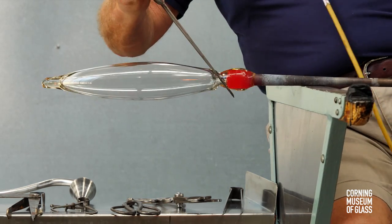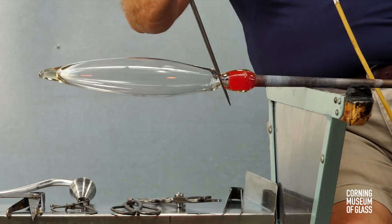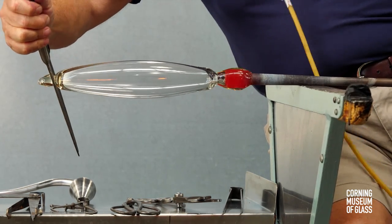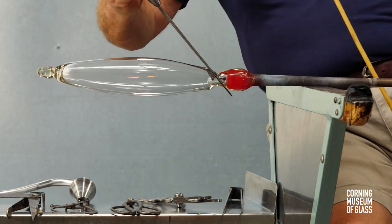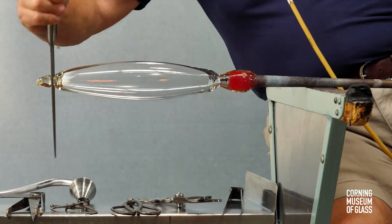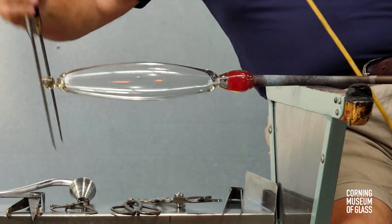Later in the process, this will allow the breaking of the vessel from the blowpipe. A constriction is made near the tip, and this will allow excess glass to be broken free.